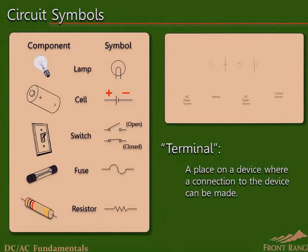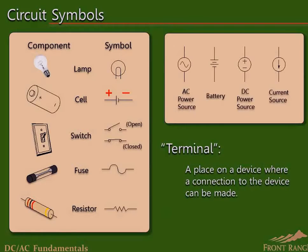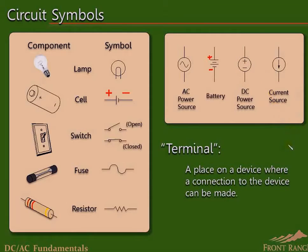Here are some additional symbols commonly used to represent various types of power sources. On the far left is a symbol for an AC voltage source; we will postpone consideration of AC circuits until later in the course. Next is the most common symbol used to represent a battery as typically drawn. Remember that the side of the symbol with the longer line is the positive terminal and the side with the shorter line represents the negative terminal. To the right of the battery symbol is a symbol representing a generic DC voltage source — it could be a battery or a DC source derived electronically from an AC power source, such as a portable AC power supply plugged into an outlet to provide power to a laptop or other electronic device.